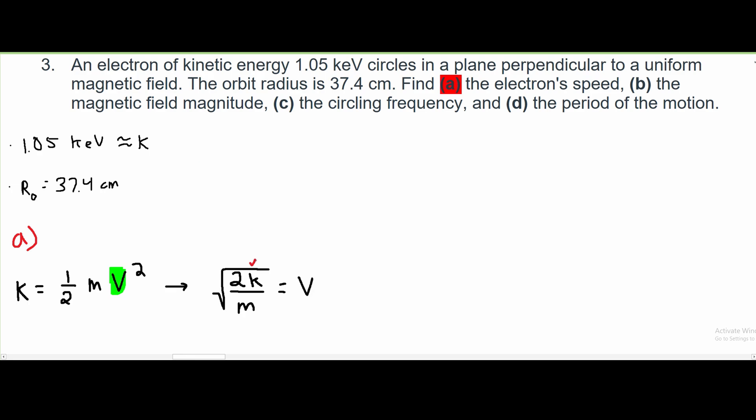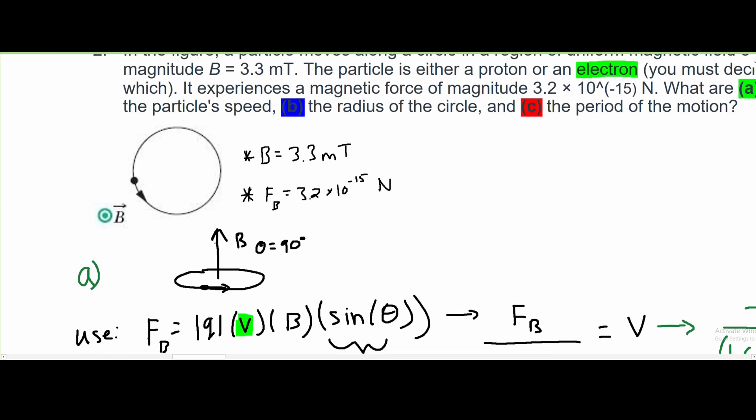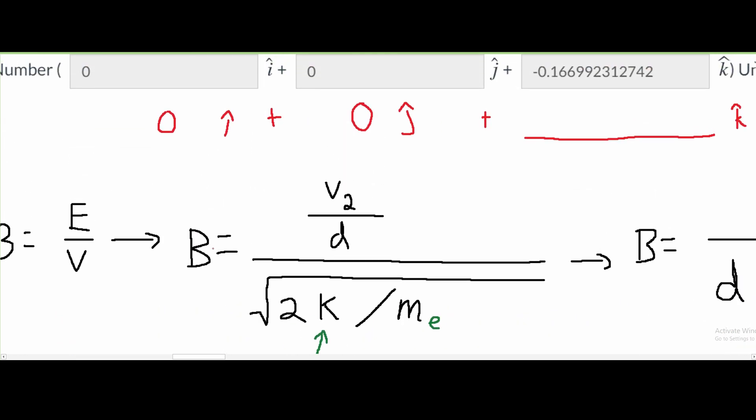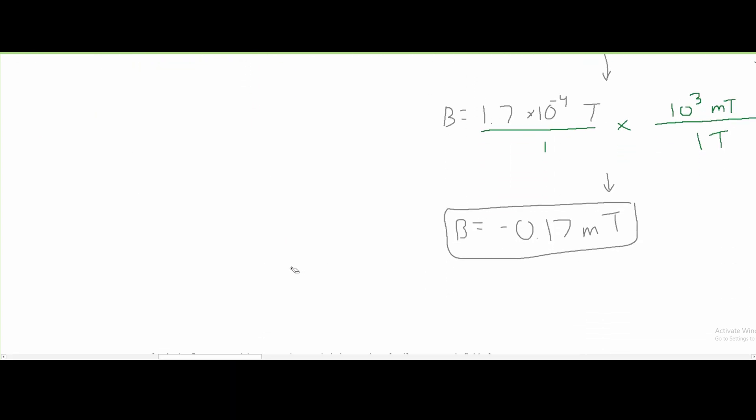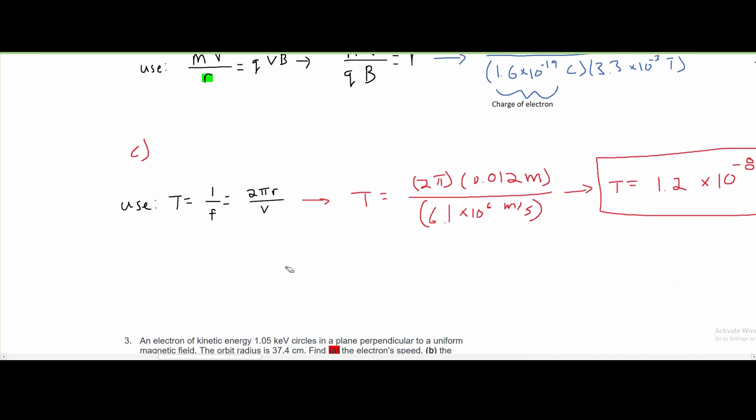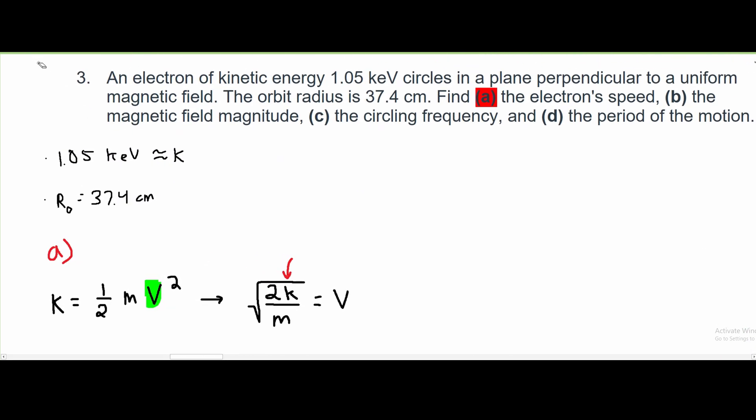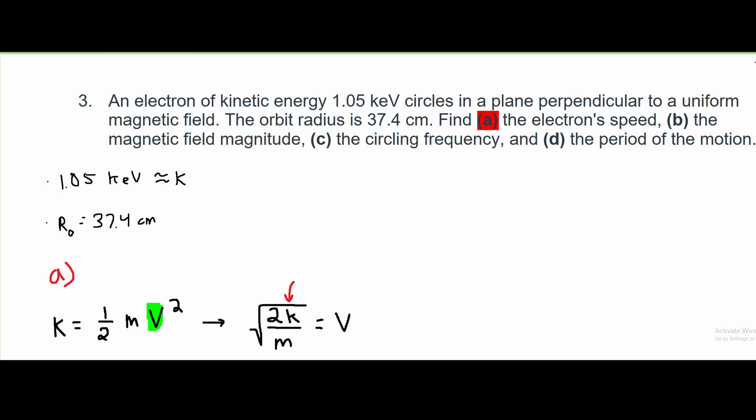From here, we know a few things. Well, k from an earlier problem, we know is v times q. This means it is the v that we're given, which in our case is this part right here, 1.05 keV. And we can highlight this in blue, 1.05 keV.